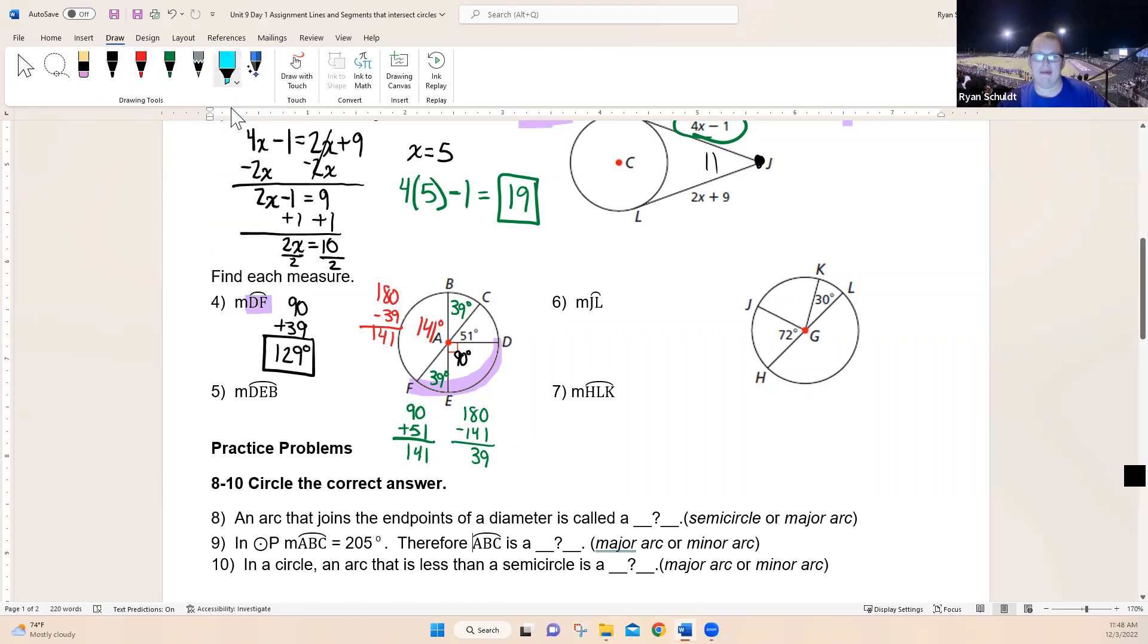Next one they ask about is arc DEB. How many letters do we see there? We see three. That means we need to go the long way around. I need to go from D to E to B all in one swipe: D, E, B. We're going all the way around. So I have to add up 90 plus 39 plus 141. If I add all of those up, it gets us 270 degrees. There we go.